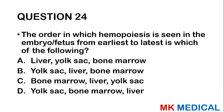Question twenty-four: The order in which hemopoiesis is seen in the embryo from earliest to latest is which of the following? A, liver, yolk sac, bone marrow; B, yolk sac, liver, bone marrow; C, bone marrow, liver, yolk sac; D, yolk sac, bone marrow, liver. In the first trimester, red cells are synthesized from the mesenchyme derived from the yolk sac. In the second trimester, the hepatic stage uses the liver. In the third trimester onwards, the myeloid stage uses bone marrow. The answer is B: yolk sac, liver, and bone marrow.